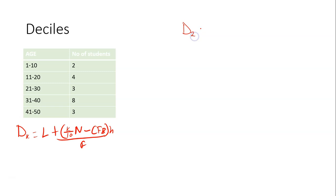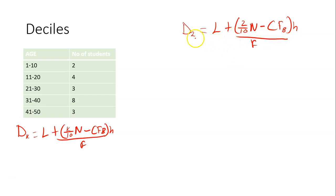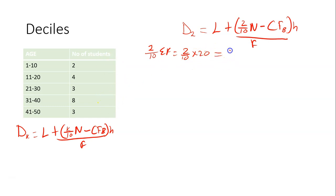To get the second decile, we need to find the second decile class first. That will be 2 over 10 times sigma F, which is 2 over 10 times 20. Sigma F is 20. So that is 4 — meaning the 4th position.